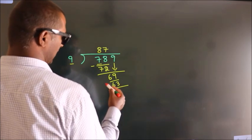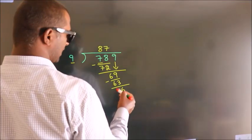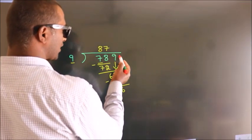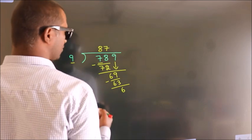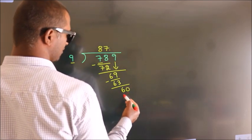Now we subtract, we get 6. After this, there are no more numbers to bring down. So what we do is, we put a dot and take 0, so 60.